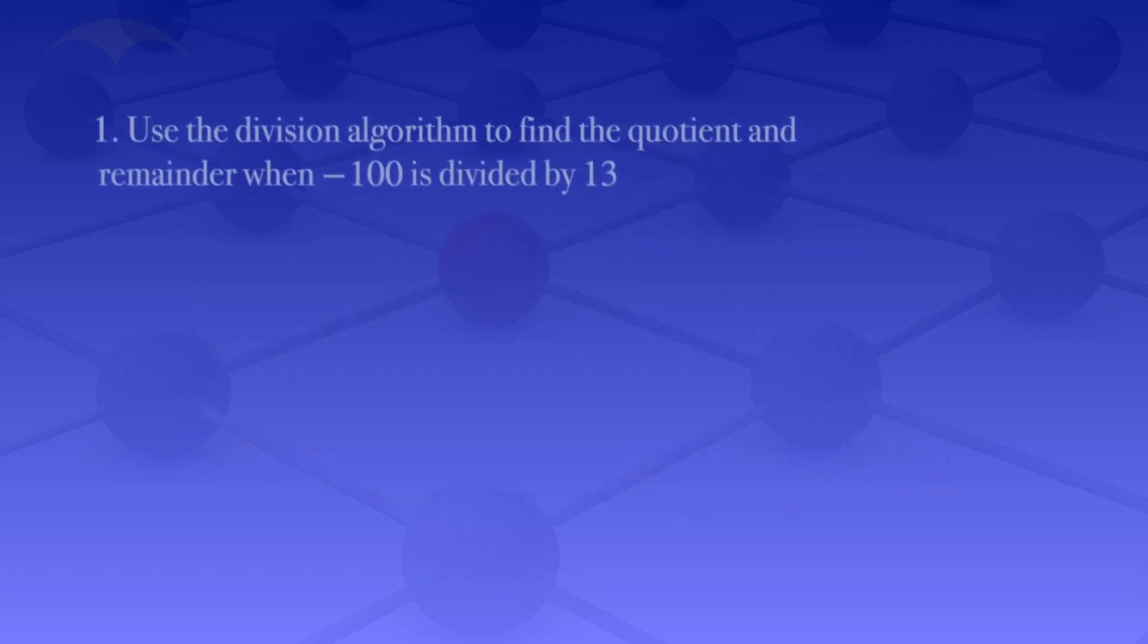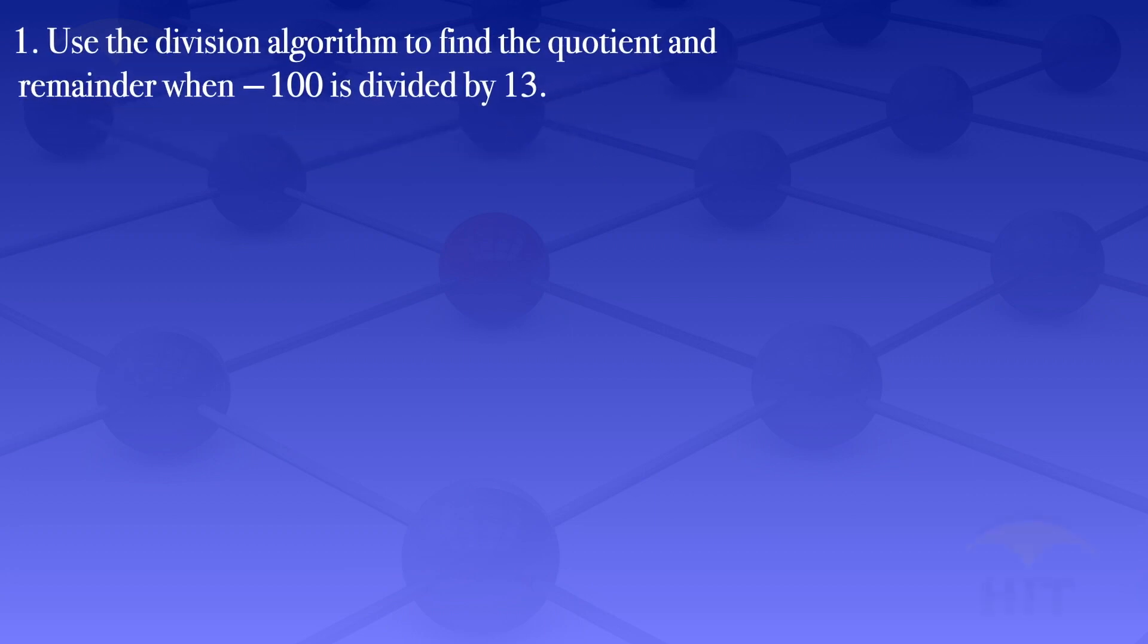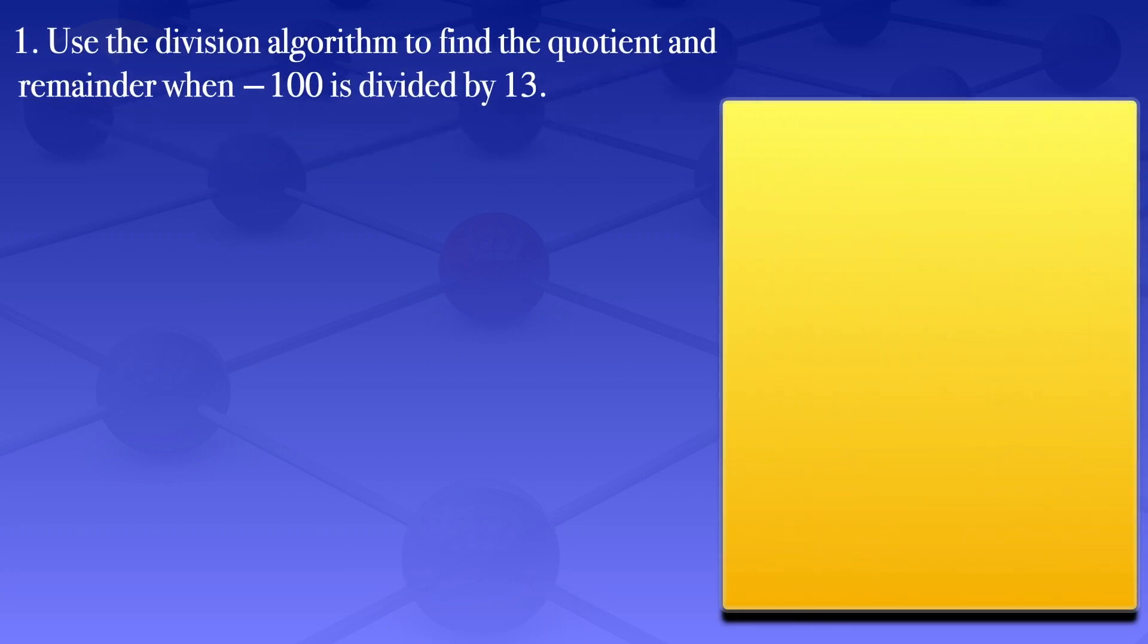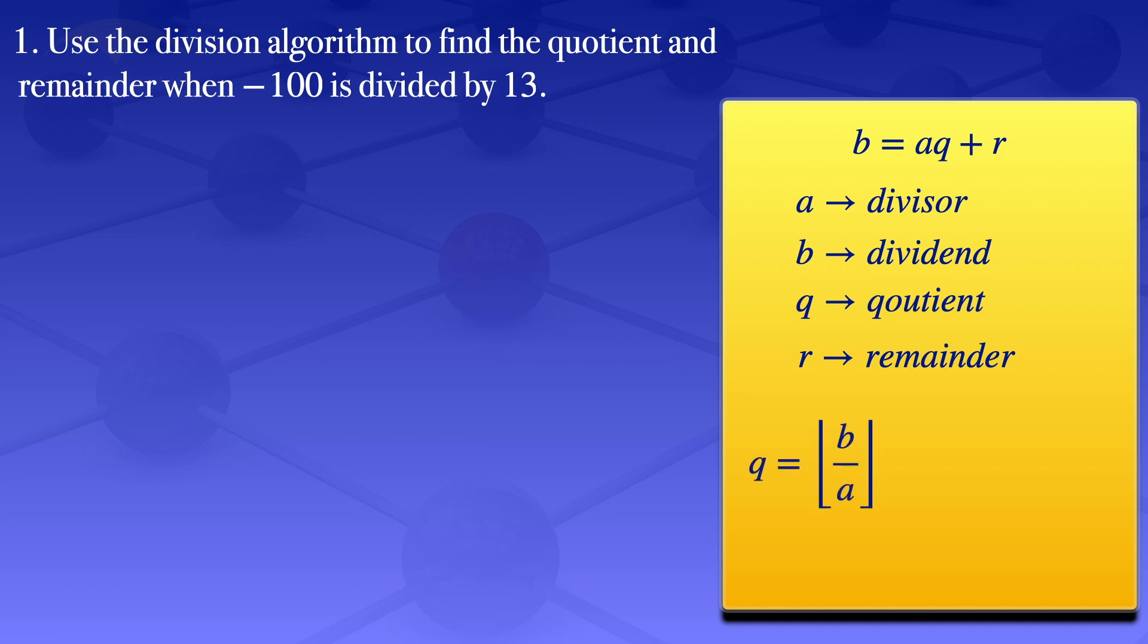To answer these questions, I'll start with the division algorithm. For the division algorithm, we have b = aq + r, where a is the divisor, b is the dividend, q is the quotient, and r is the remainder. The quotient is given by the floor value of b divided by a. The remainder is r = b - aq.